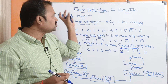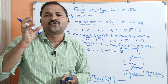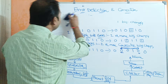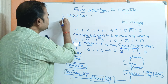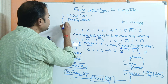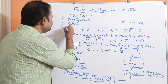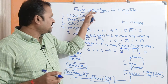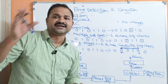In order to detect whether a frame has any errors or not, we have four mechanisms. Error detection is done with the help of four approaches: the first approach is checksum, the second is parity check, the third is CRC which stands for Cyclic Redundancy Check, and the fourth is hamming code. By using these four algorithms we can check whether that frame has any error or not, and these algorithms are used at the receiver side.